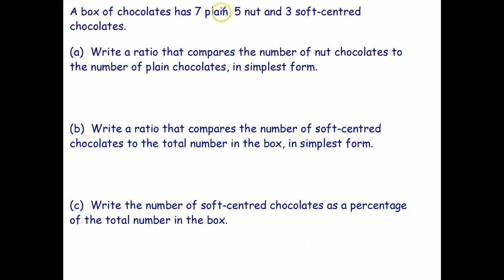A box of chocolates has seven plain, five nut, and three soft-centered chocolates. Write a ratio that compares the number of nut chocolates to the number of plain chocolates in simplest form.